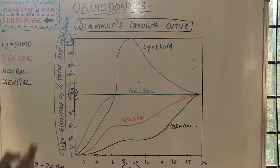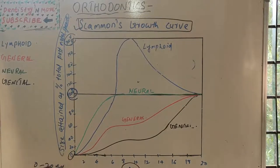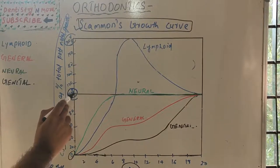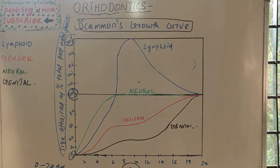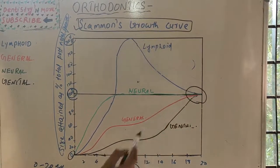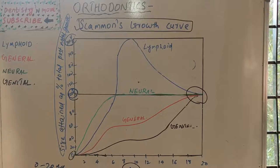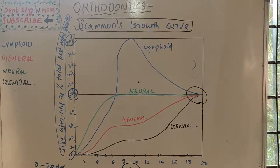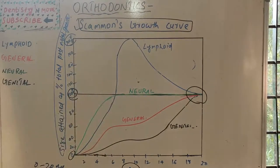On the x-axis we have age from 0 to 20 years, and on the y-axis we have size attained as percentage of total postnatal growth — 0% at the bottom and 100% as the maximum adult size. Some tissues reach even double the adult size, that is 200%. Ultimately by 20 years all tissues reach adult size at 100%. Not all tissues or organs grow at the same time or to the same extent; each tissue has a different growth rate and pattern.